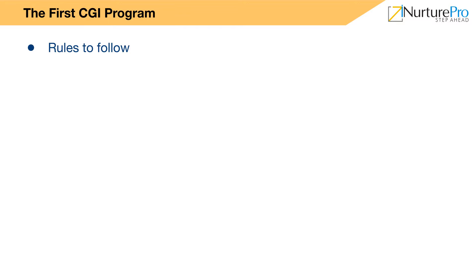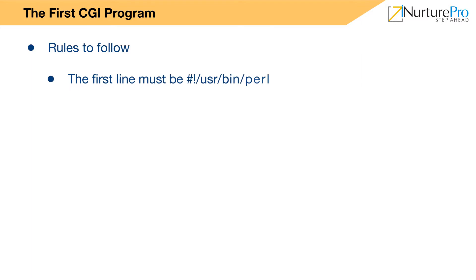Every Perl CGI program must obey the following format. The first line must be the shebang line: #!/usr/bin/perl. This line tells the Perl interpreter to execute the program or script.